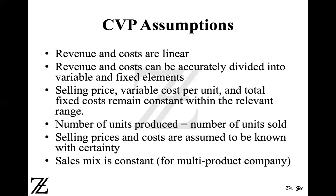Selling price and costs are assumed to be known with certainty — you know what the selling price is and what the costs are. If you are unable to determine the selling price and costs, you won't be able to draw a cost volume profit graph. For multi-product analysis, your sales mix should be constant. We will discuss what sales mix means in a multi-product cost volume profit analysis in another video.